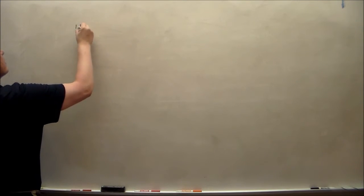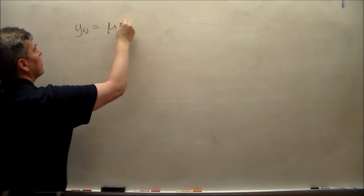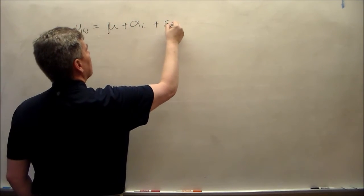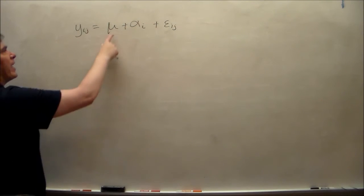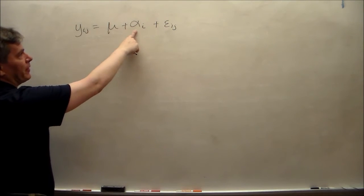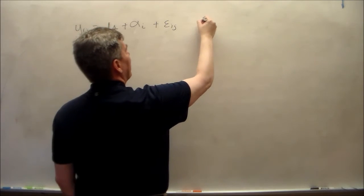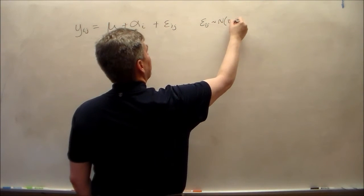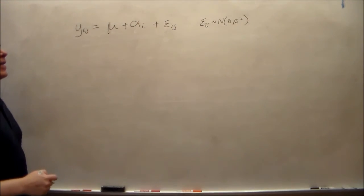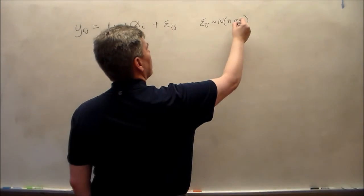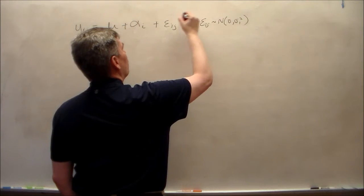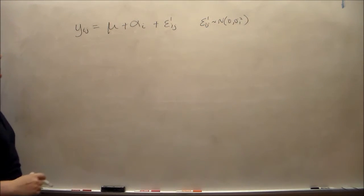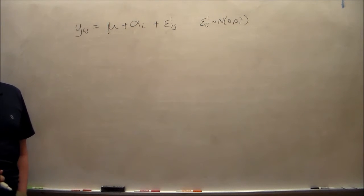So what does the linear model look like? This was the one-way analysis of the variance model. Grand mean effect of the A variable, first variable, plus the randomness. We made the assumption that the epsilons were normally distributed, 0, sigma squared. I'm going to do a subscript of 1 on that sigma squared. And I'm going to put a superscript of 1 on those epsilons, to indicate that this is just one of the epsilons that we'll be dealing with.